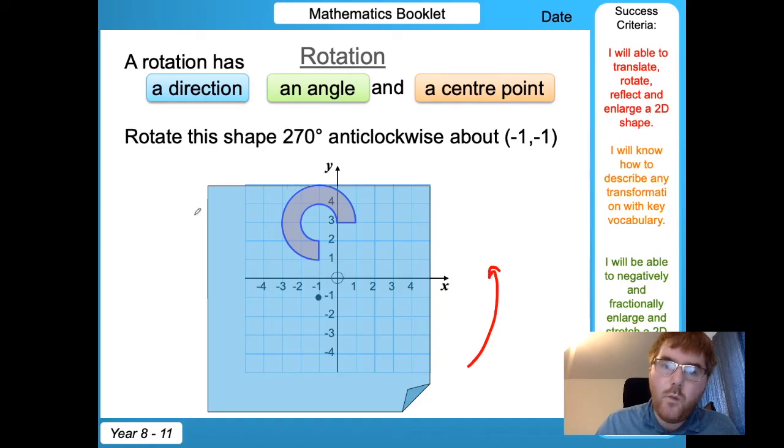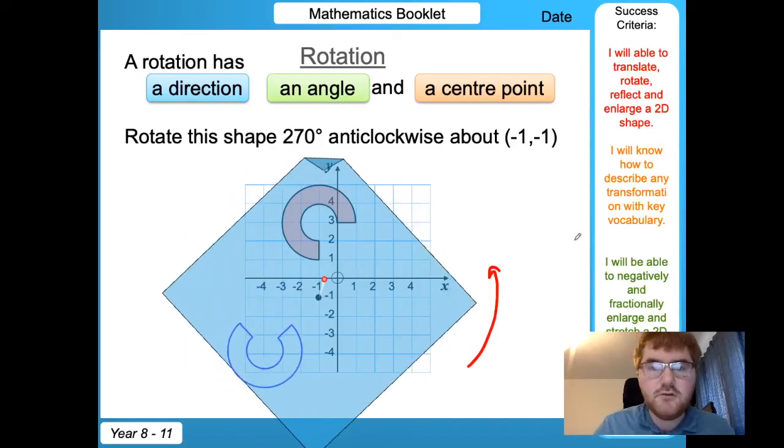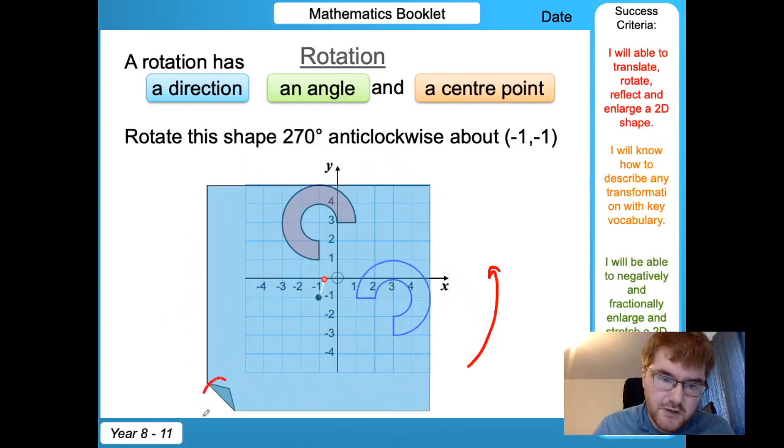so 90, 180, 270. So we're going to go in this direction until the corner of the paper is over here. So we're going to put our pin on (-1,-1). We rotate all the way around until this corner is over here, and then we draw around the shape like so.